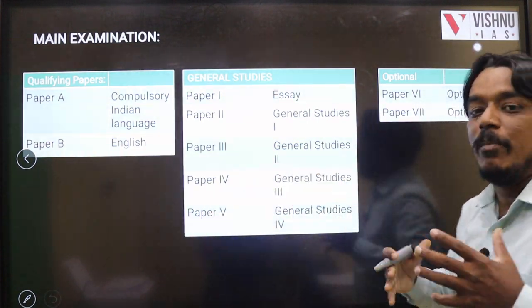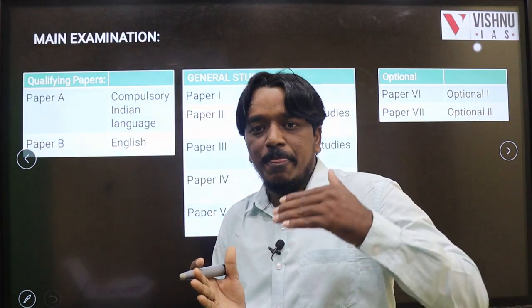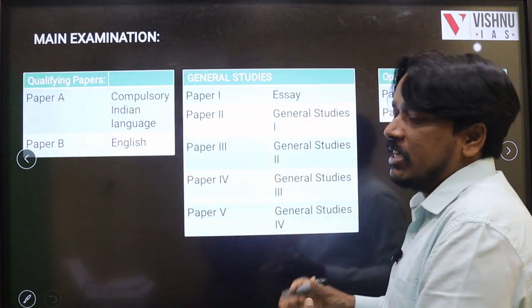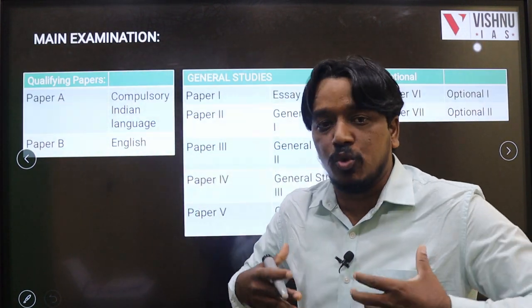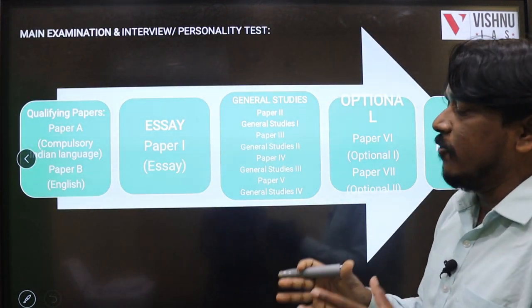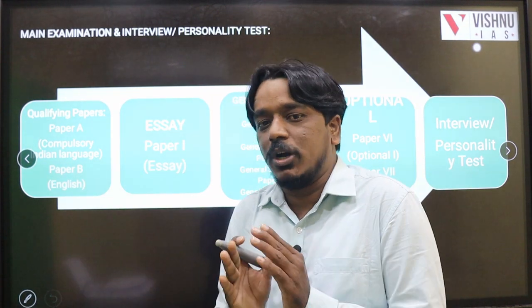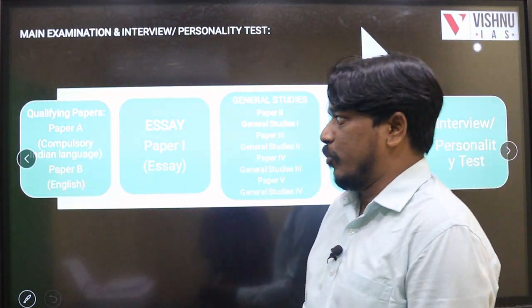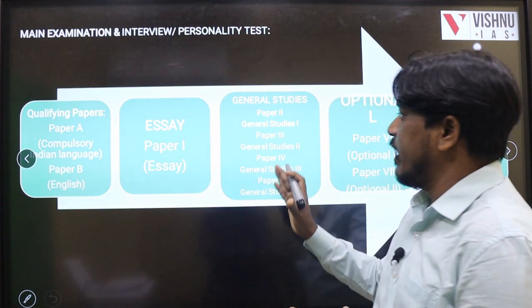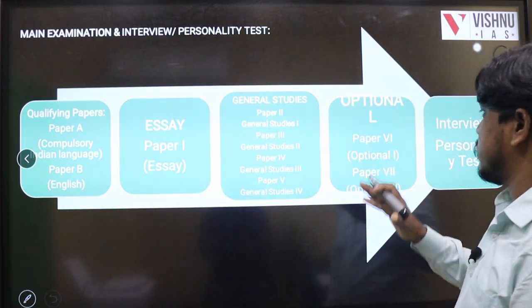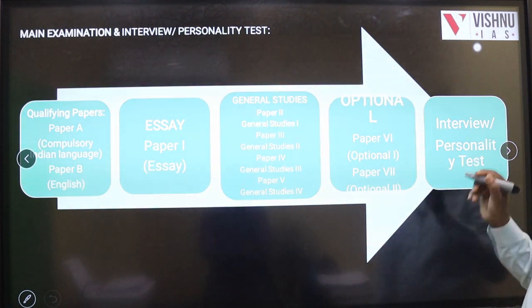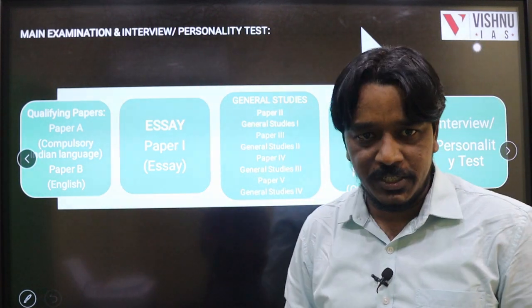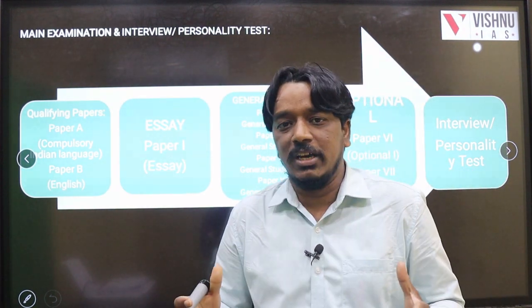These are the total papers in the mains examination. The preliminary exam is different — mains is completely descriptive, and the final merit list is based on mains marks. So definitely we have to score very good marks there. But particularly today we are focusing on CSAT Paper 2 complete preparation and syllabus analysis. The mains stages include qualifying papers, essay, GS papers 1 through 4, optional papers, and finally the interview or personality test.